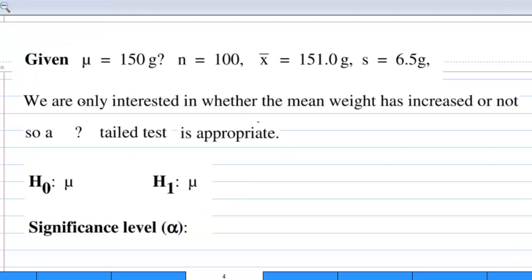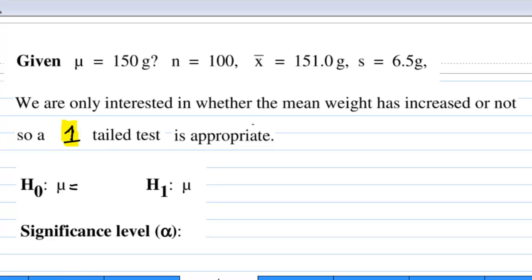Since we are only interested in whether the mean weight has increased or not, a one-tail test is appropriate. The null hypothesis H0 is mu equal to 150g, and the alternate hypothesis is mu greater than 150g. Significance level is 5% or 0.05.